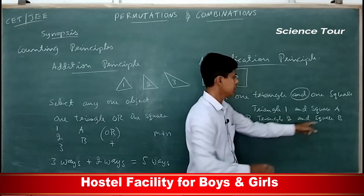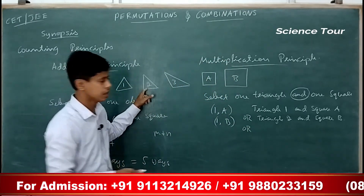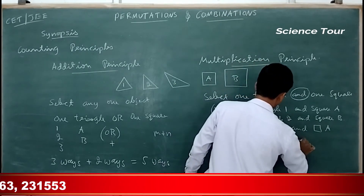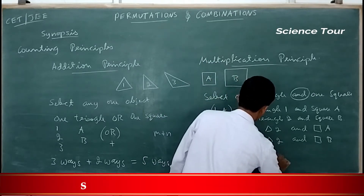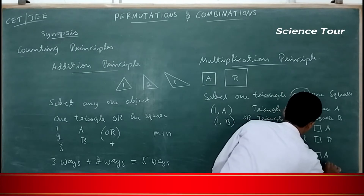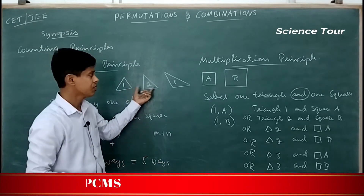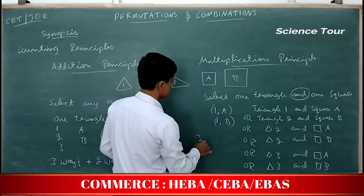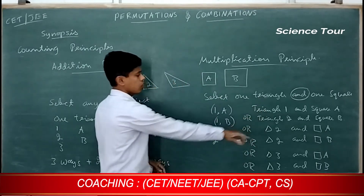So the second kind of selection can be triangle 2 and square B. There is another way: take the second triangle and square A, or square B. Or the next way: take the third triangle with square A, or the third triangle with square B. So totally how many ways? There are totally six ways.